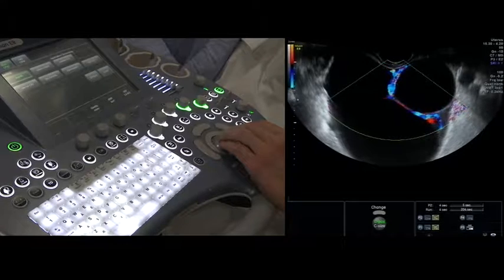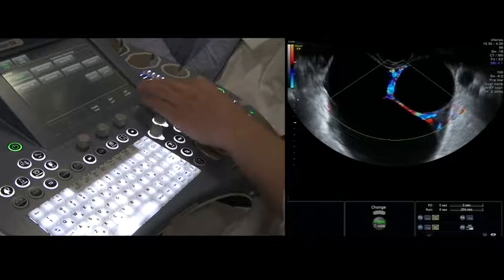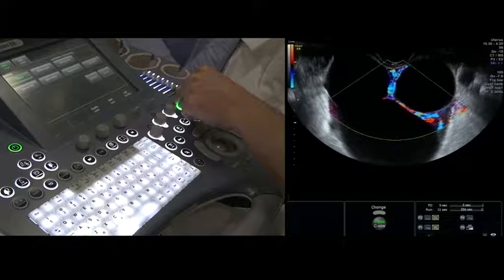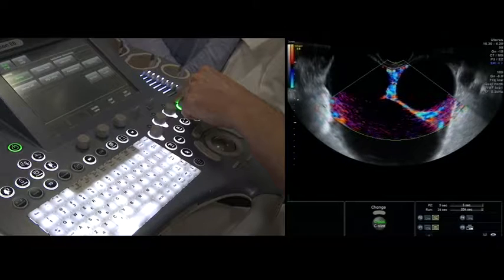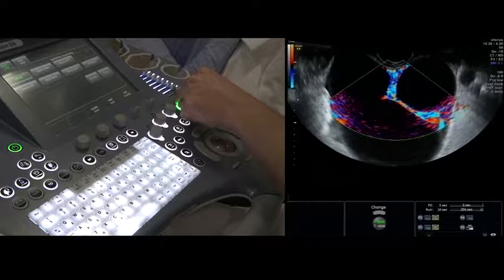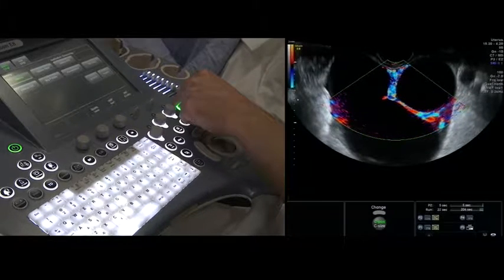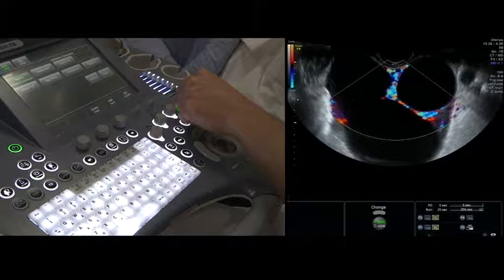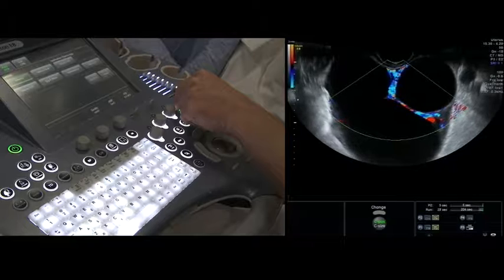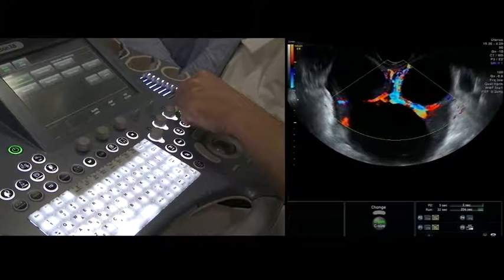This is the correct setting to assess ovarian tumors. Then we also have to adjust the color gain by increasing it a bit. Then we see artifacts and flow signals inside the cyst fluid, which is clearly too high. We gradually reduce the flow until the artifacts have disappeared, and then we have the highest sensitivity for flow signals.